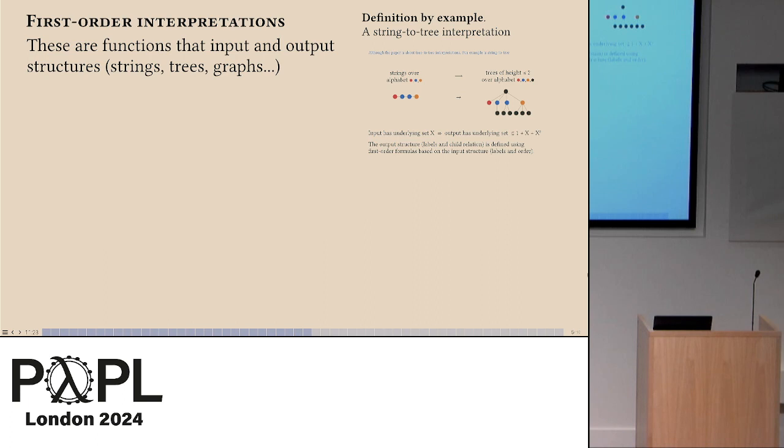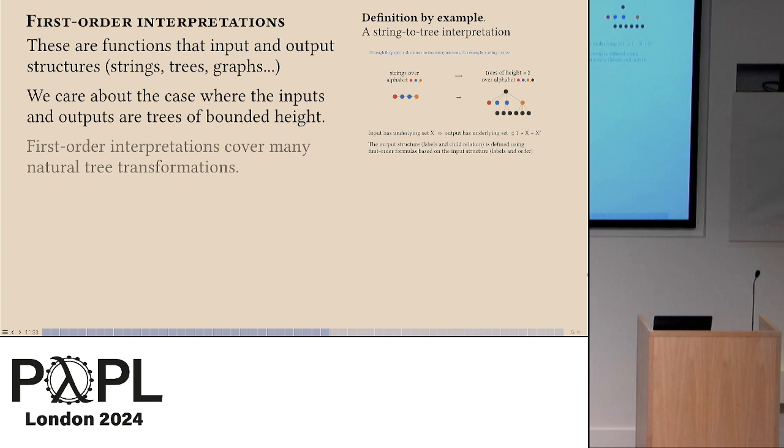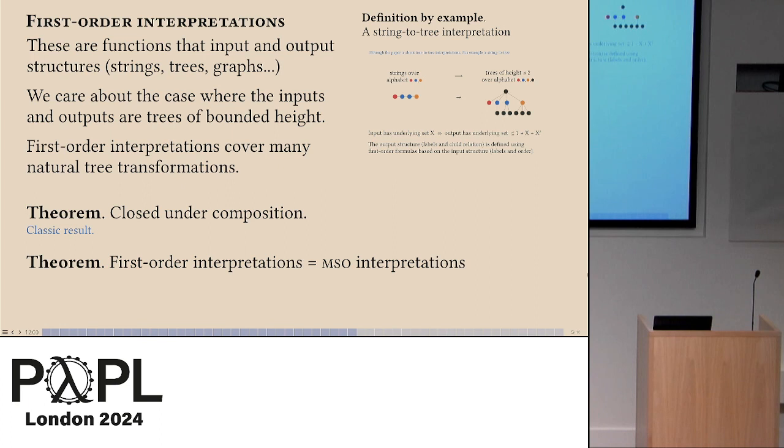So that's first order interpretation. There are functions that input and output structures. In the particular case of this talk, we're going to be thinking about inputs and outputs being trees of bounded height. This is a very classical thing but you can do a lot. Almost any natural syntactic transformation on trees is going to fall in scope of this definition. One simple observation is that they're closed under composition. Here's a slightly less obvious one that first order interpretations are the same thing as monadic second order logic interpretations. It turns out on the kind of structure that we're dealing with here first order logic and monadic second order logic have the same expressive power.